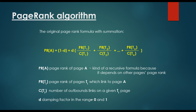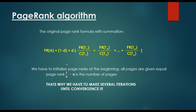D is the damping factor in the range 0 to 1. We are going to talk about the problems concerning this formula and why we need to use this damping factor. What's very important is that we have to initialize the PageRanks, because at the beginning we don't know the PageRanks of the given websites. All pages are given equal PageRank of 1 divided by n, where n is the number of pages. That's why we make several iterations until convergence.